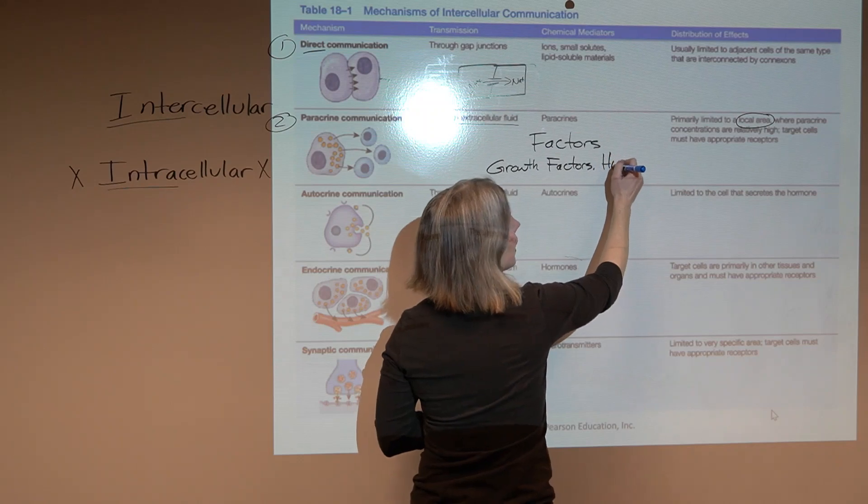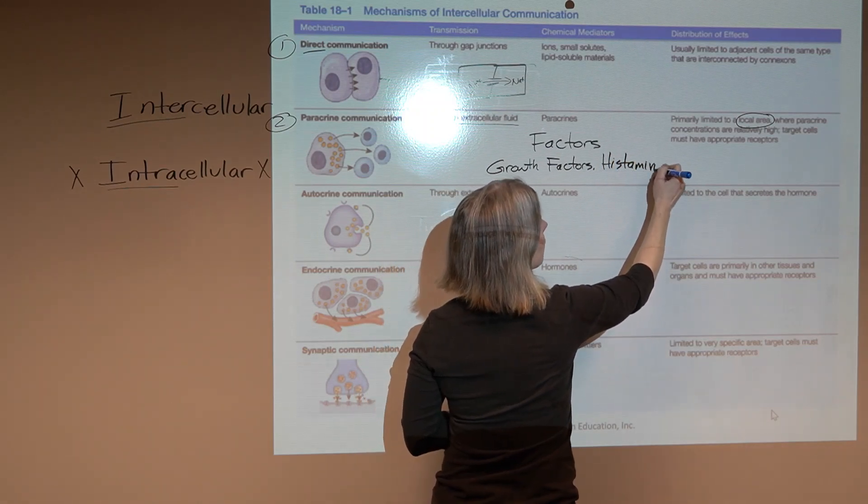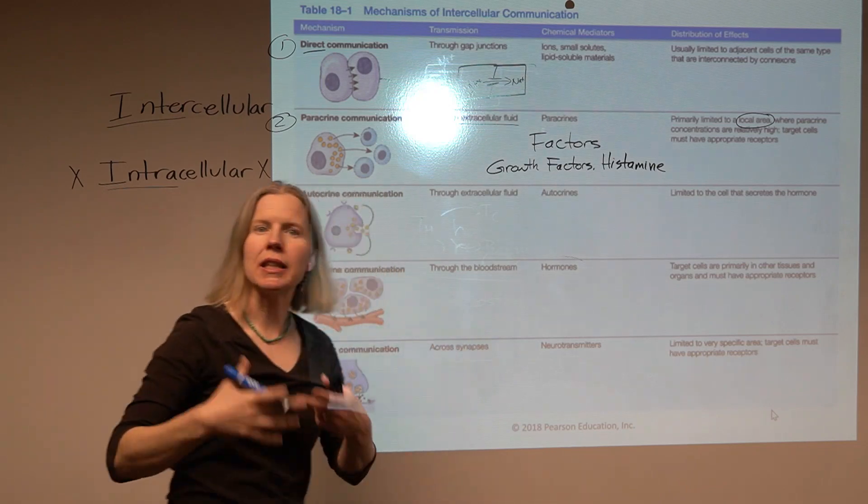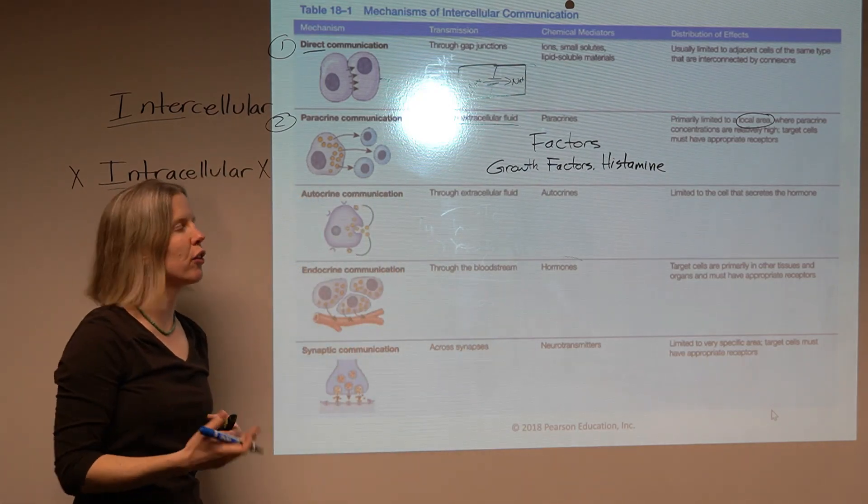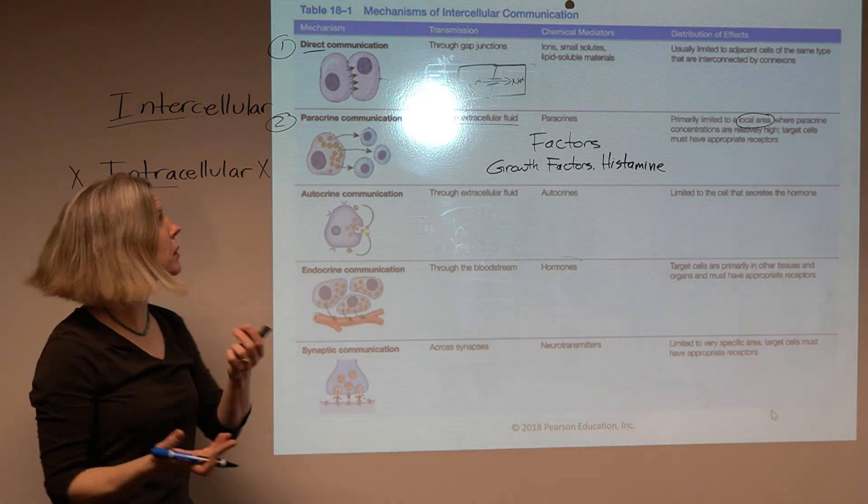I think another good example of paracrine communication would be histamine. So in the inflammatory response, a chemical is released and that's going to change cells in that general vicinity. So those might be some examples for you.